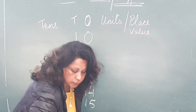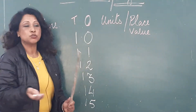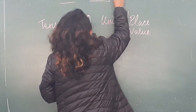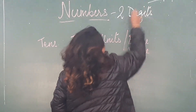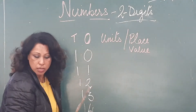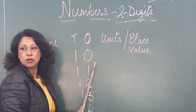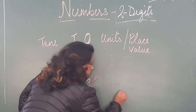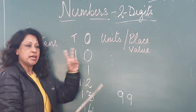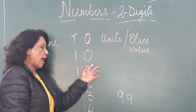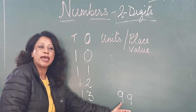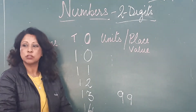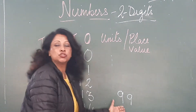So today we are going to start with numbers with two digits. Two digits start from ten — one zero — and it carries on all the way to ninety-nine — nine nine. Two digit numbers start from ten and end at ninety-nine. After 99 we have three digit numbers, which you'll learn later.